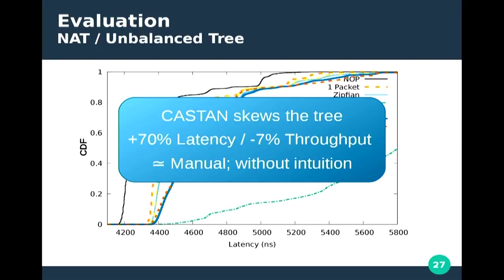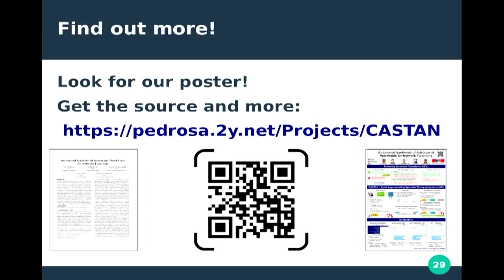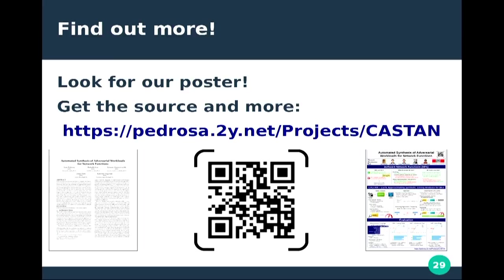In conclusion, CASTEN is a system that automatically generates adversarial workloads. It does this by attacking algorithmic complexity, the CPU cache hierarchy, and by carefully reversing hash functions to exploit data structure internals. It operates with little, if any, developer input. The adversarial workloads we generate are about the same as manual workloads but without requiring human intuition, and they do far better than uniform random when compared with the same number of flows. In one case, we increased latency by 201% and dropped throughput by 19%. Resources including the paper, poster, and source code are all available online. Thank you.